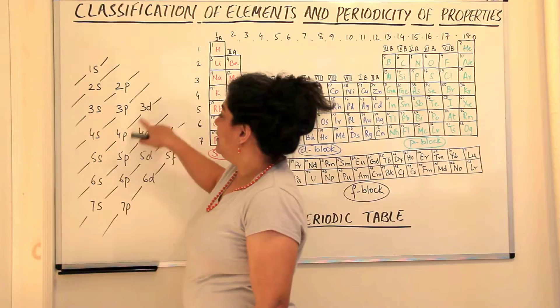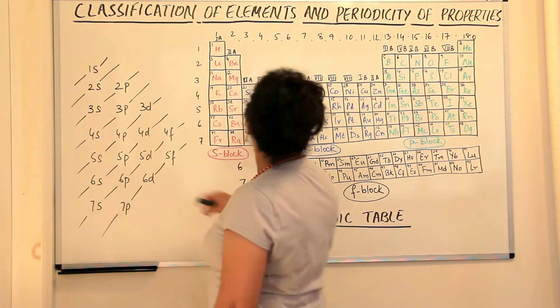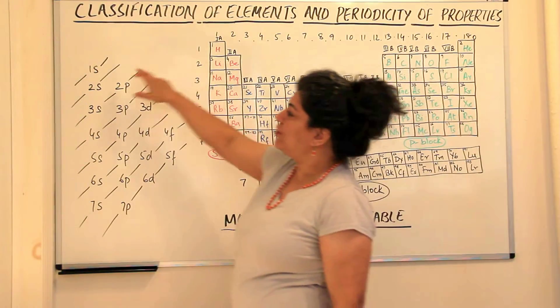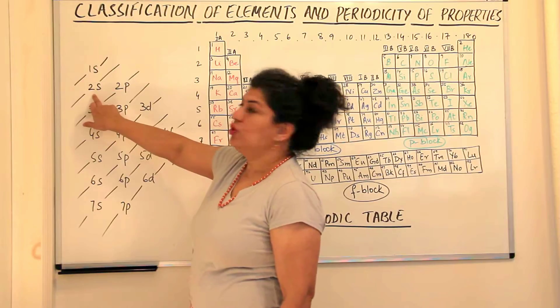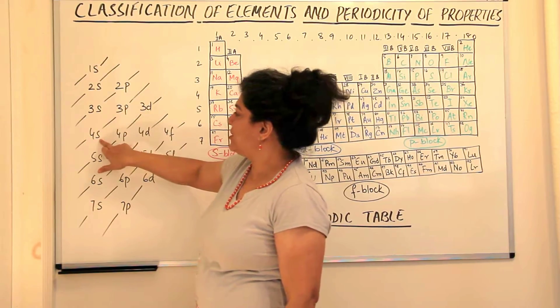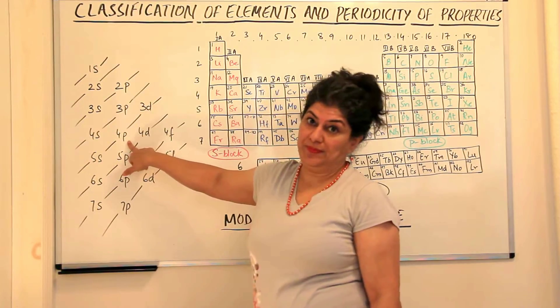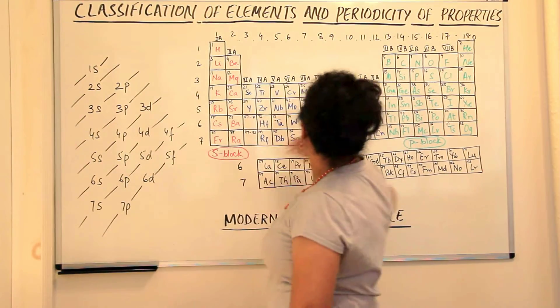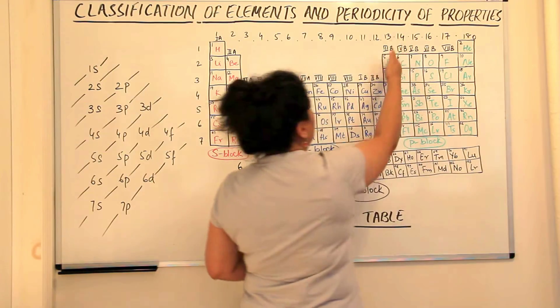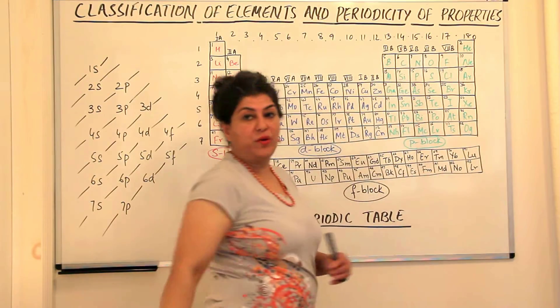The next element where the 4p orbital is being filled up would then be gallium. Gallium has 31 electrons and what is the electronic configuration? 1s2, 2s2, 2p6, 3s2, 3p6, 4s2, 3d10 and 4p1. So this one electron goes to the p orbital and therefore gallium comes under the p block of the periodic table.